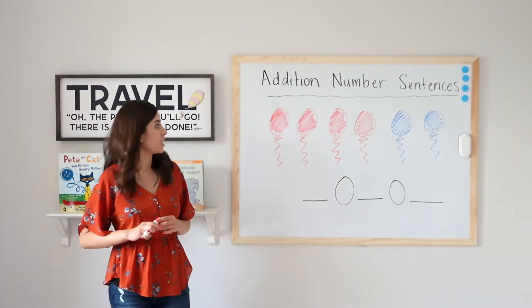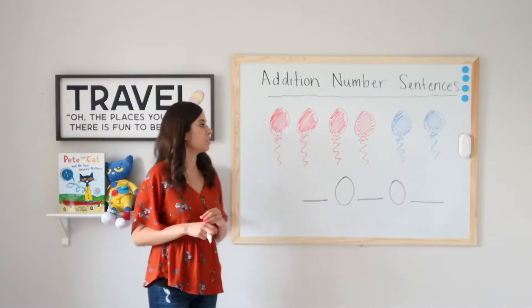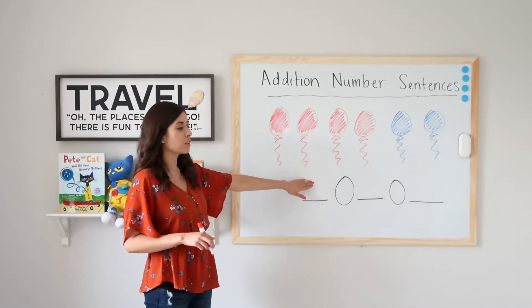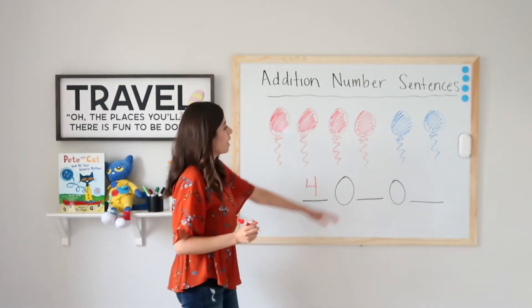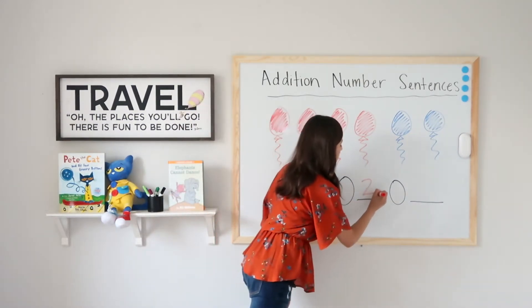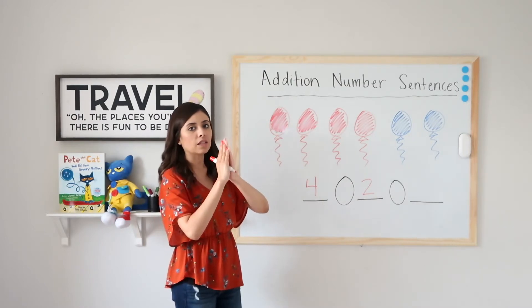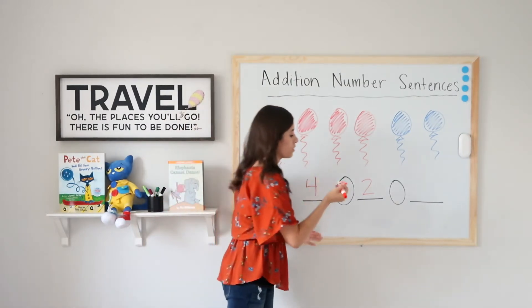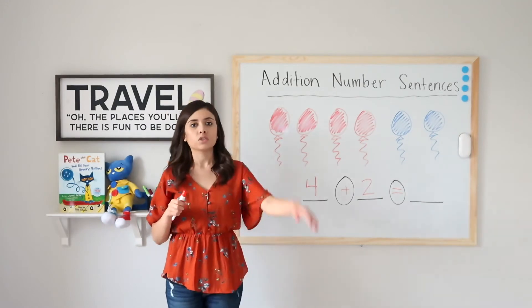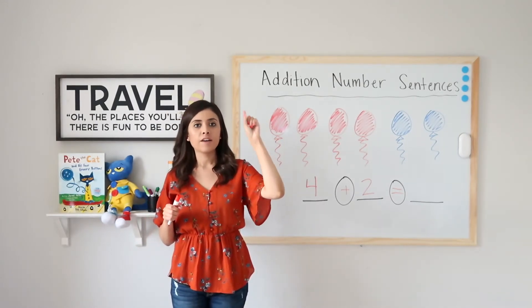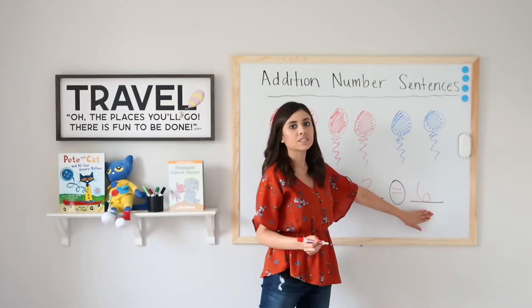Let's look at another example. I have four red balloons and two blue balloons — how many balloons do I have in all? My first part is four and my second part is two. In all means to take part and part and make it a whole, so I add. Four plus two — say four and count up two: four, five, six. Your answer is six, which is also called the sum.